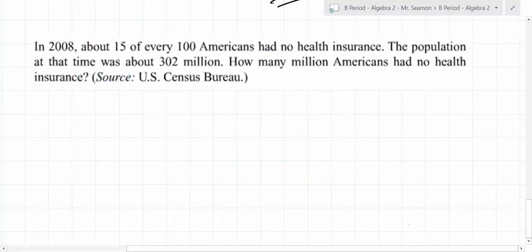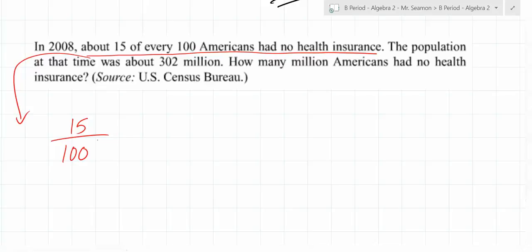How long would it take if we didn't cancel? So let's just pause right there. What ratio can we write for this? 15 out of 100. The population at that time was about 302 million. How many million Americans had no health insurance? To answer this question, we need to find what? So remember, the first thing you do is you read and understand the question. But then you always answer, what do I need to answer this question? I need to know the number of millions of Americans with no health insurance.